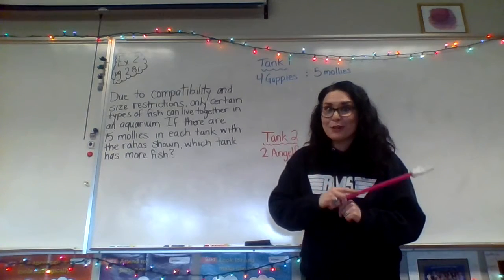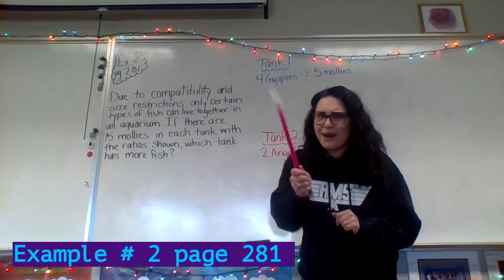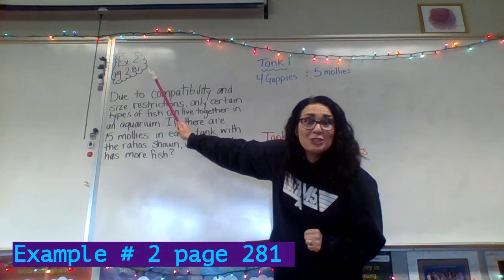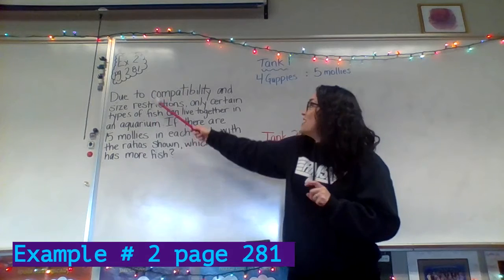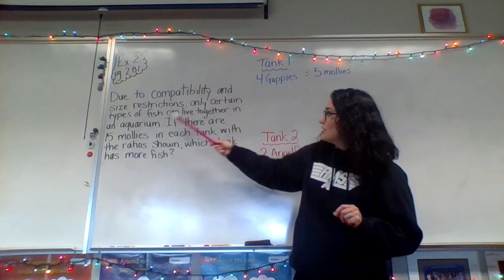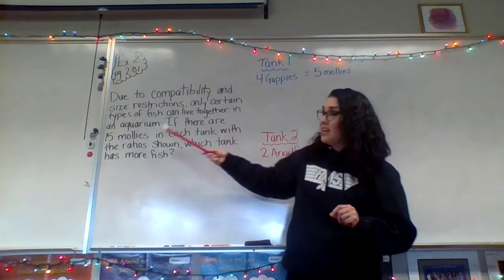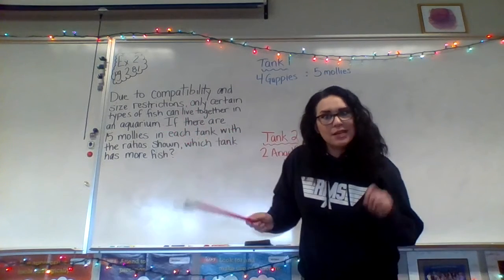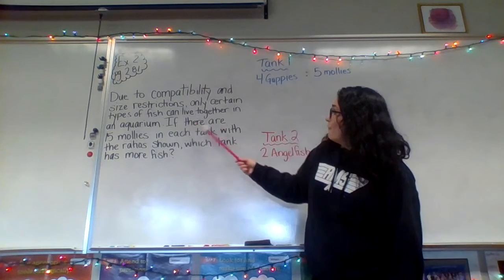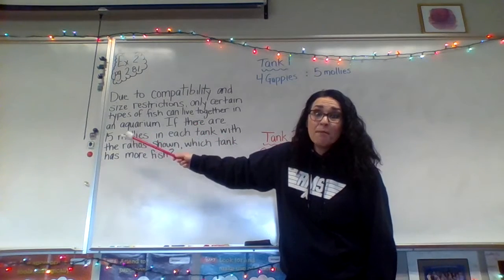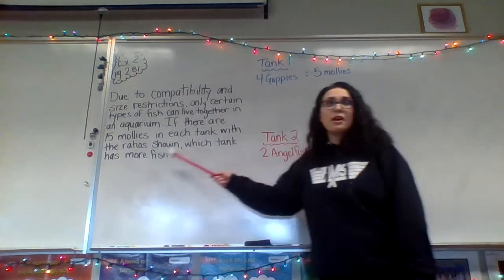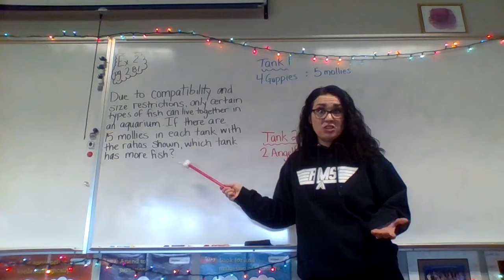The first problem we're going to look at together is example number two on page 281. It says: due to compatibility and size restrictions, only certain types of fish can live together in an aquarium. Compatibility means do they get along — they need to be friends. If there are 15 mollies in each tank, with the ratios shown, which tank has more fish?